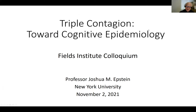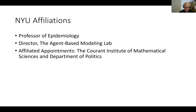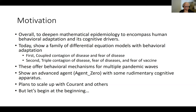It's a great honor to be here. Thank you for the kind introductory words. I want to talk about triple contagion, which is an effort in the area I call cognitive epidemiology. I'm professor of epidemiology, I direct the agent-based modeling lab at NYU, and have affiliated appointments at the Courant Institute, the Department of Politics, Santa Fe, and a variety of other places. The overall idea of this line of work is to deepen mathematical epidemiology to encompass human behavioral adaptation and its underlying cognitive drivers.